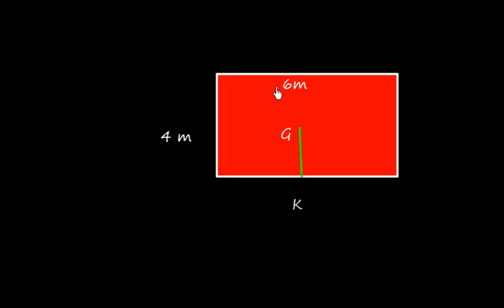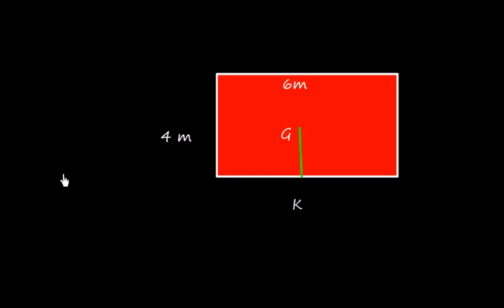In this video, I'm going to discuss the vertical shift of center of gravity. Let us assume this is a rectangle with dimensions 4 meters and 6 meters. The length is 6 meters and the width is 4 meters. The KG of this box will be 2 meters, because the center of gravity will be the geometrical center, so KG equals 2 meters.